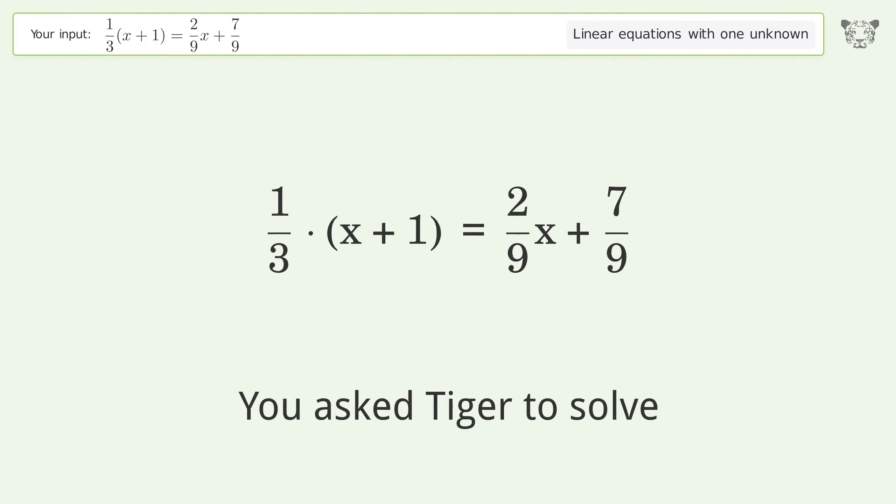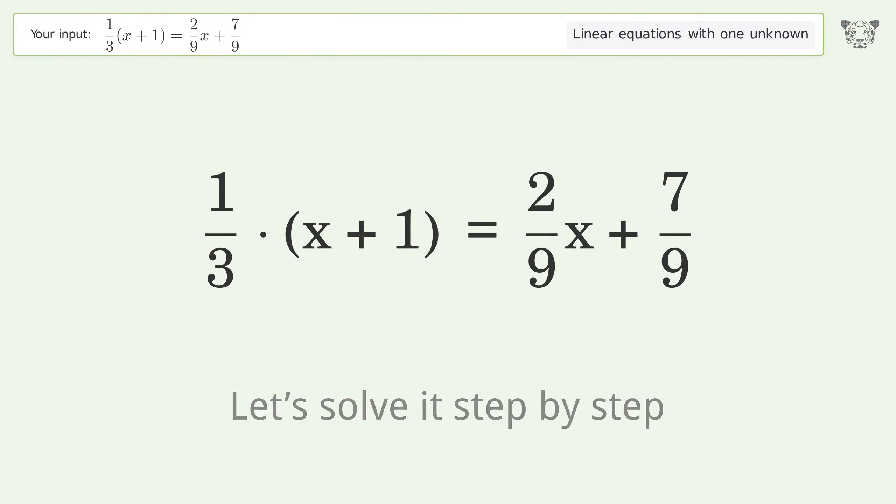You asked Tiger to solve this. It deals with linear equations with one unknown. The final result is x equals 4. Let's solve it step by step. Simplify the expression, multiply the fractions.